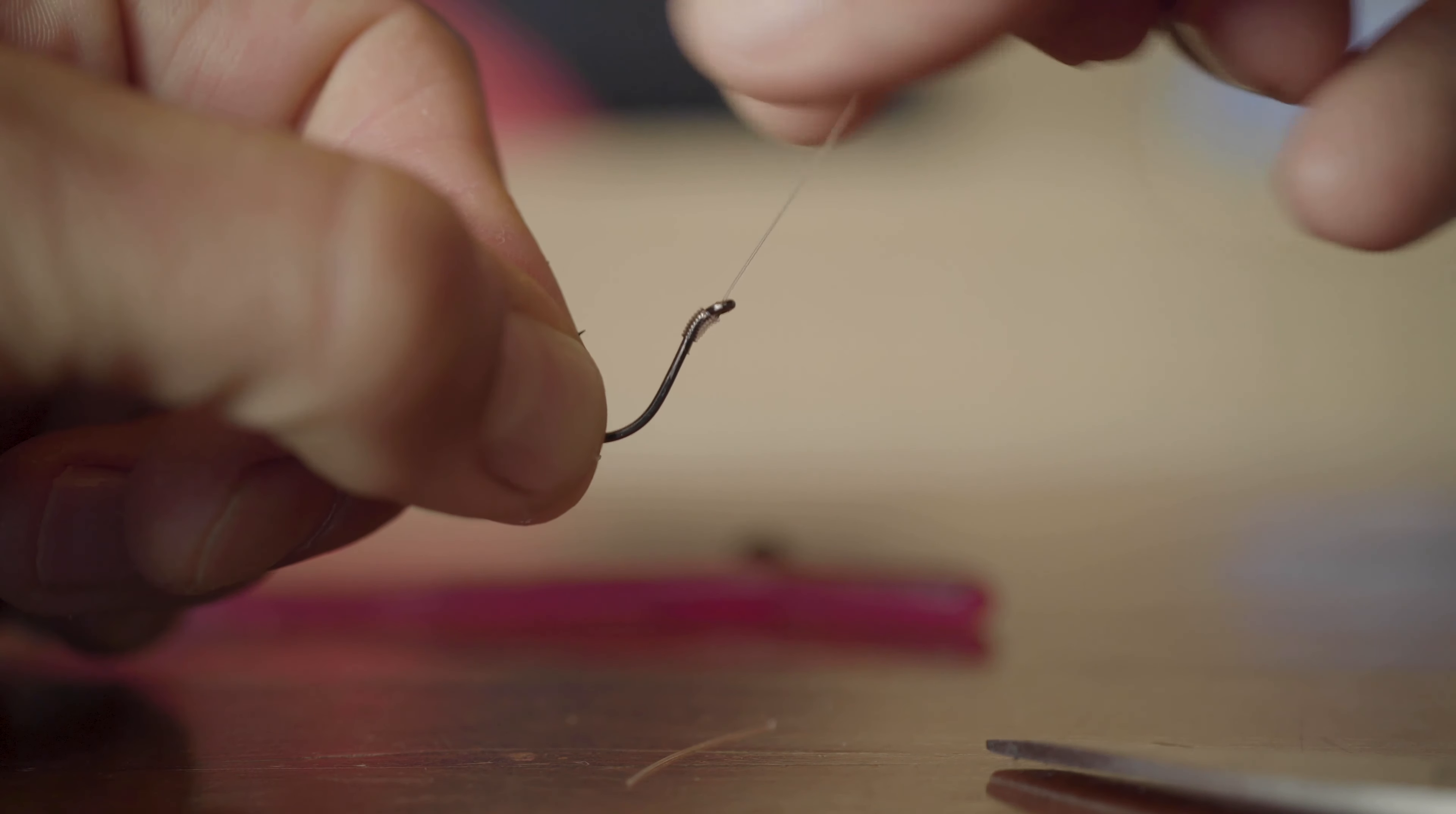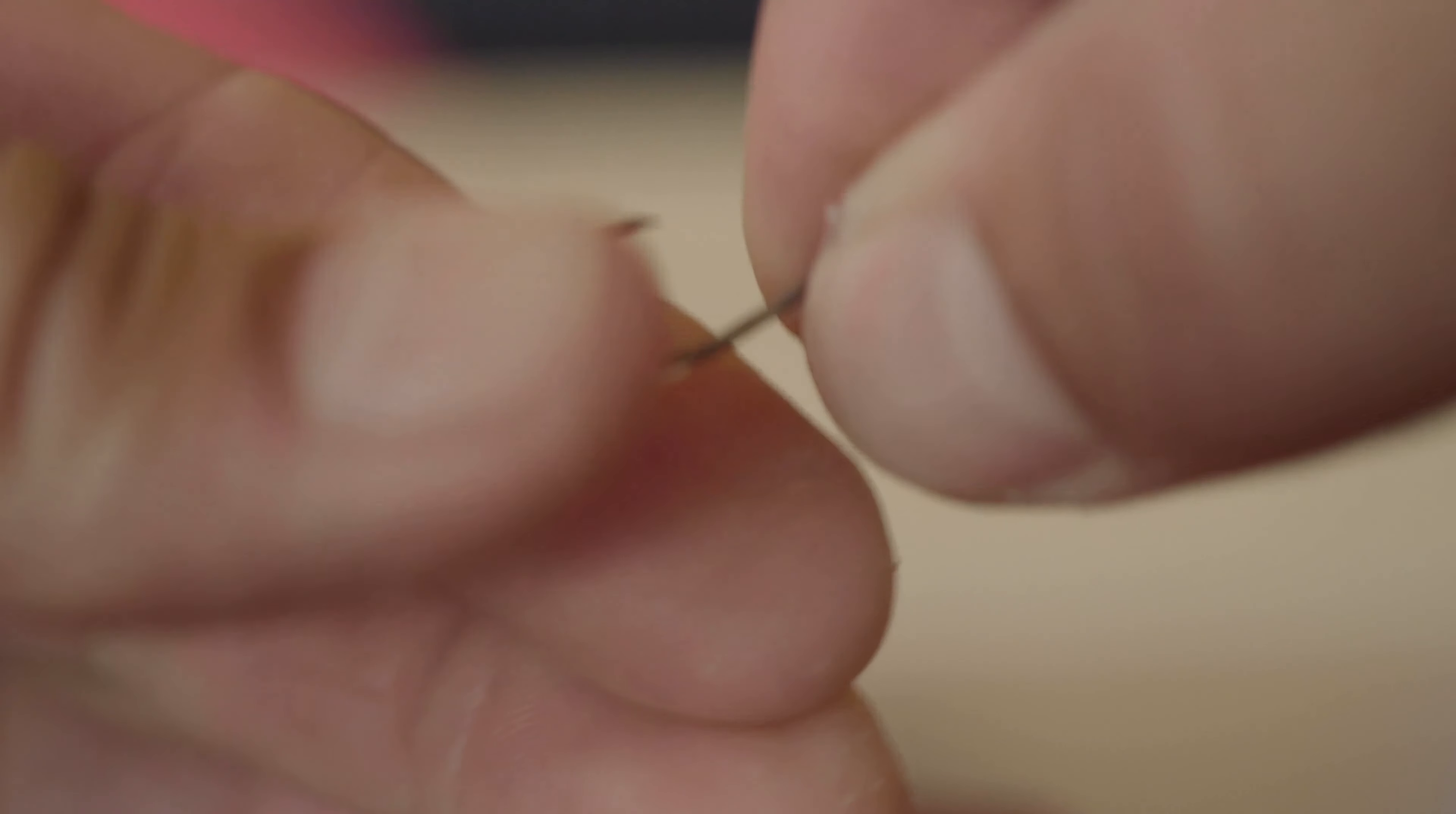Do a big loop and come back up from the bottom to the top with the line in the opposite direction as you did the first time. Leave it about an inch out from the top of the eye, then pinch both lines on the shank of the hook. You're left with a big loop hanging below the hook.